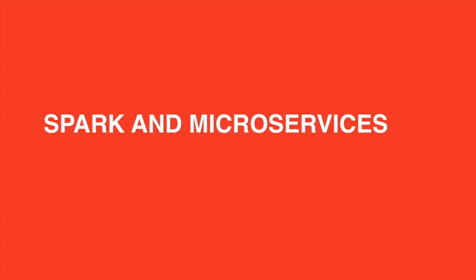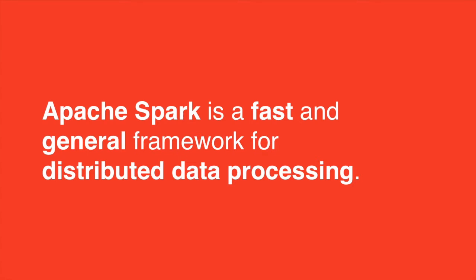Let's start with some background on Apache Spark. The tagline for Spark is that it's a fast and general framework for distributed data processing, but that's really only part of the story. I think the really compelling thing about Spark is that it's actually easy to use. Unlike a lot of other frameworks for distributed data processing — if you think of MPI or Hadoop MapReduce — those frameworks are based on an execution model that's easy to execute in parallel. Spark goes the other way around: it takes a familiar programming abstraction and comes up with a way to execute it efficiently.